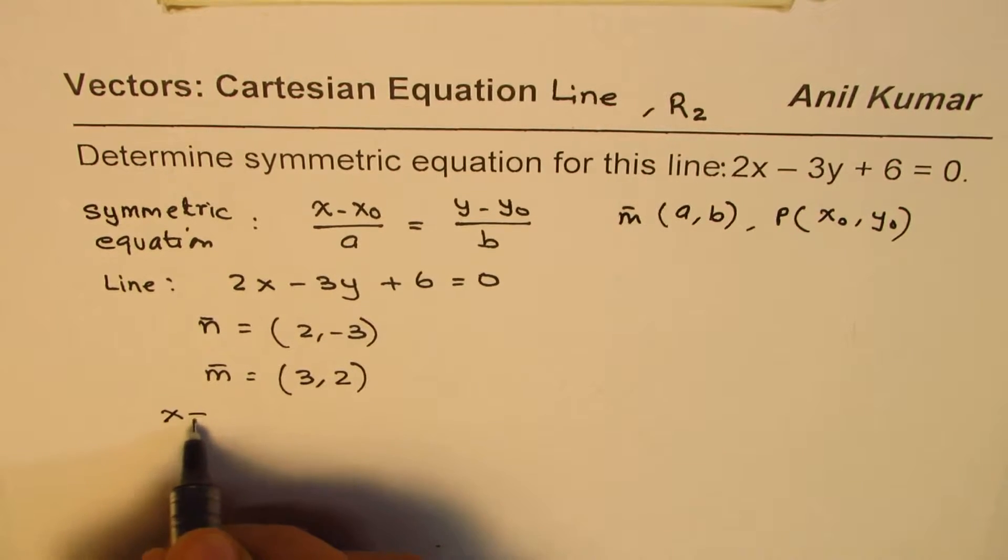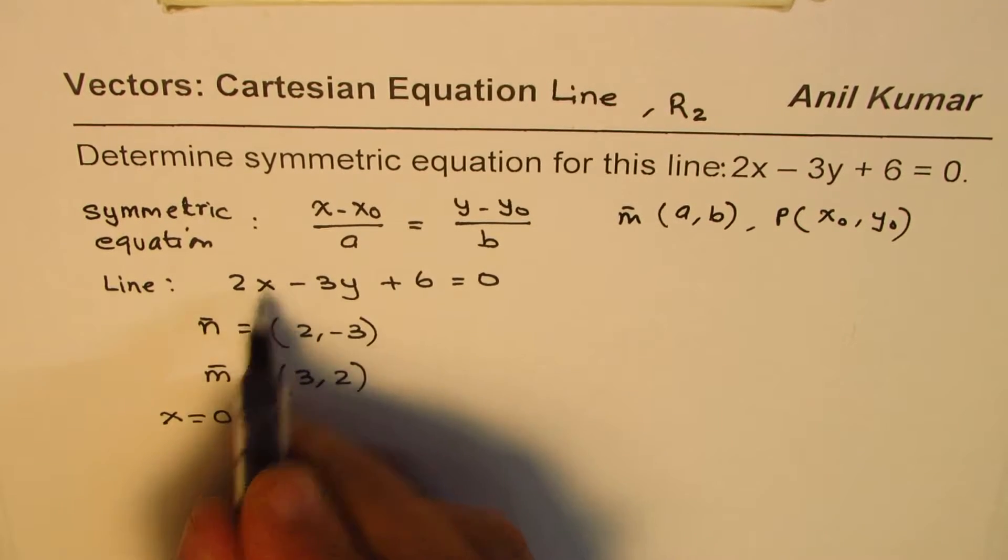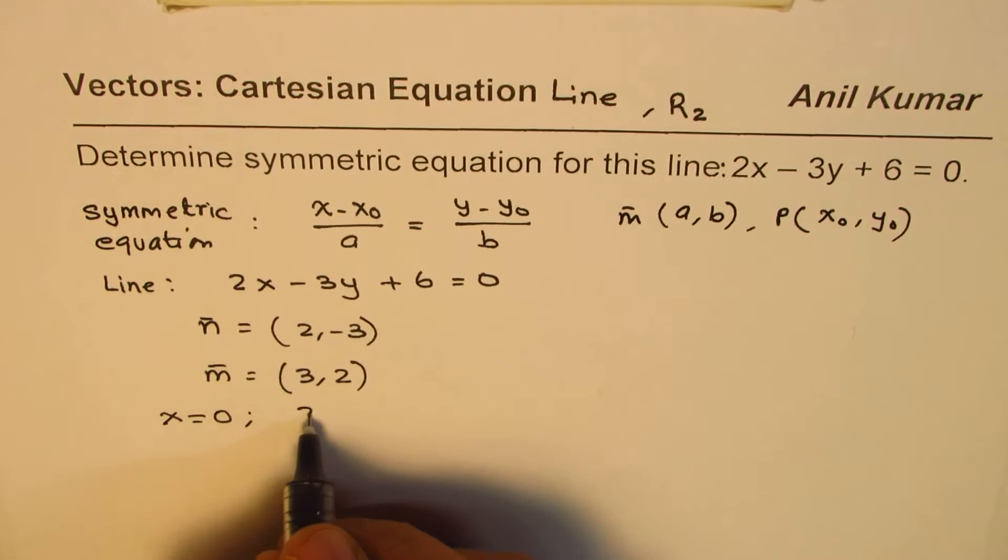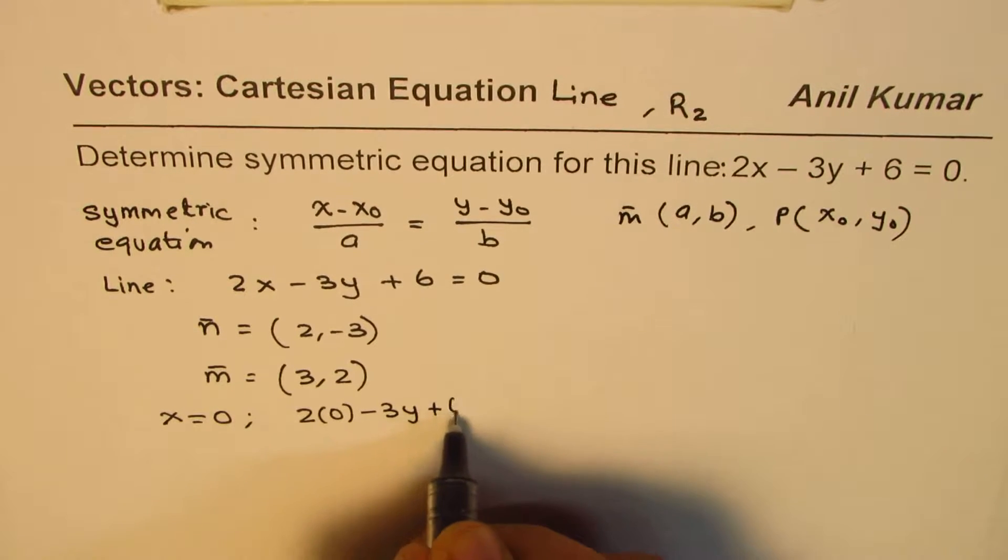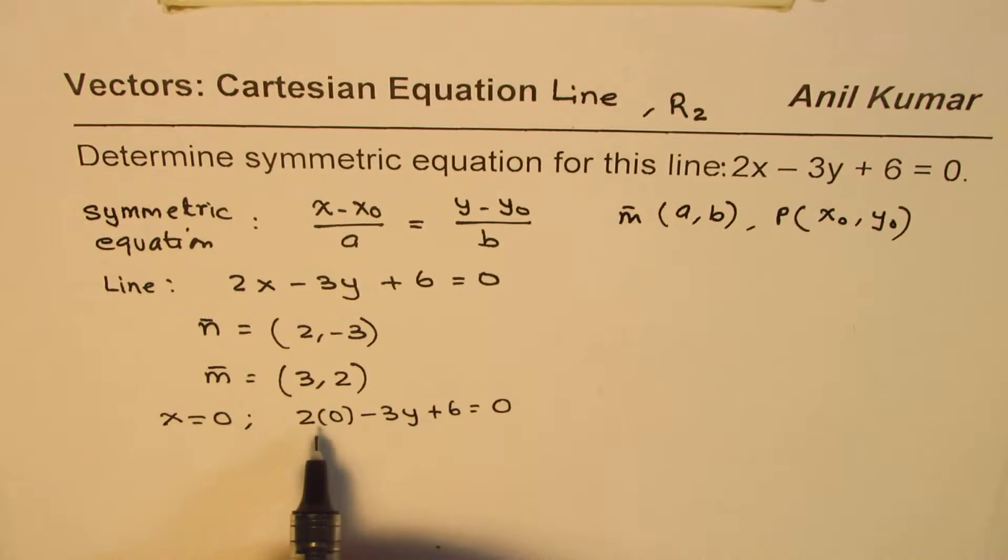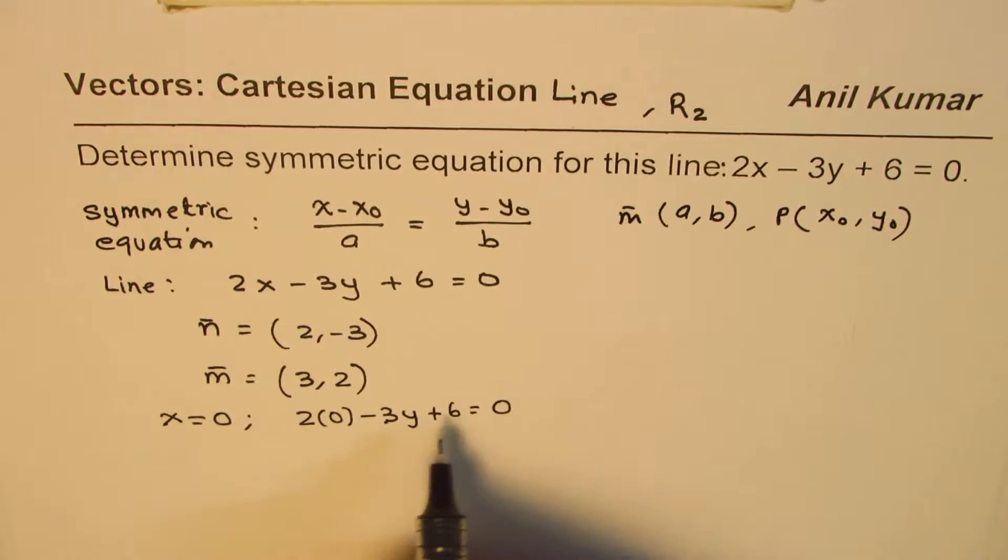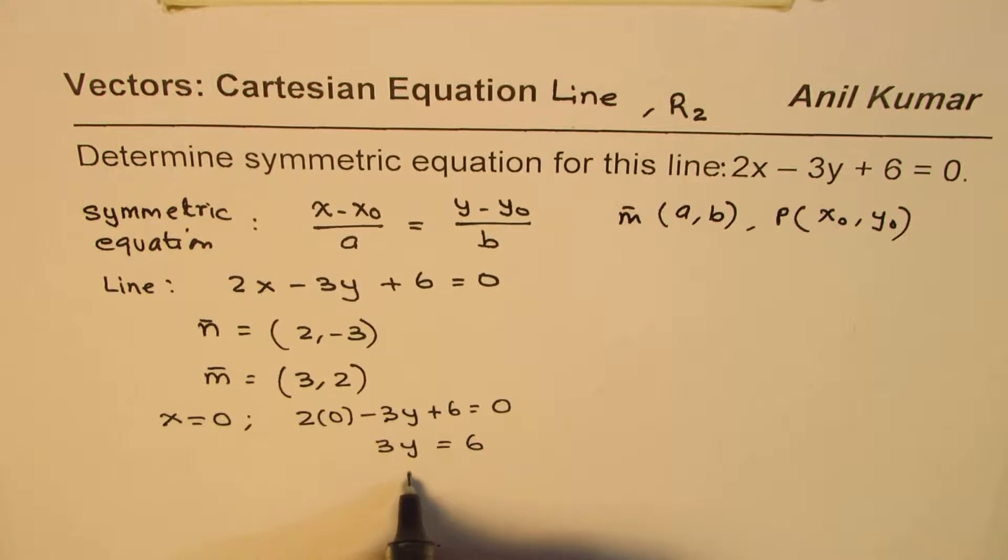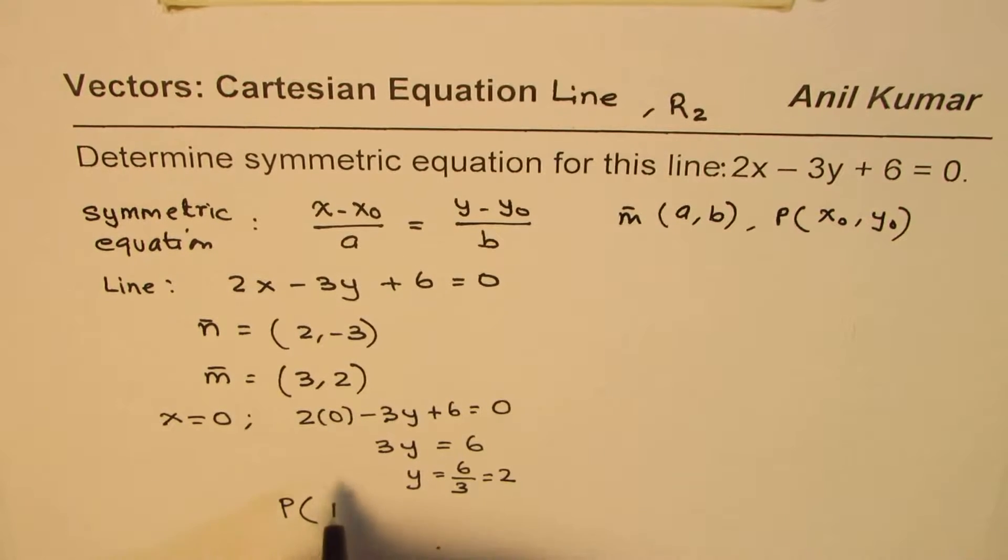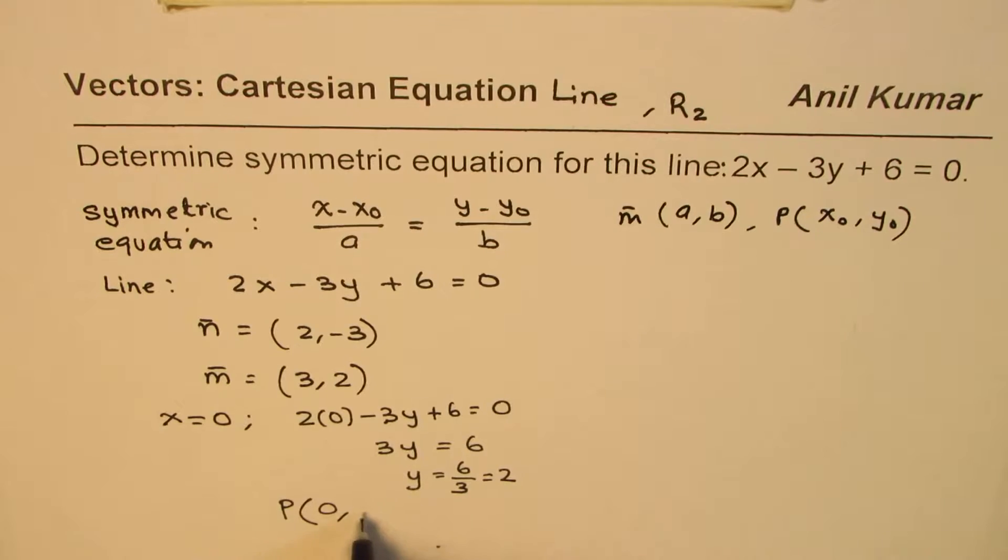So, if I substitute x equals to 0, in that case, what happens to the line? I get 2 times 0 minus 3y plus 6 equals to 0, and this is 0. So, we can solve for y. So, we have 3y equals to 6 or y equals to 6 divided by 3, which is 2. So, we get a point on the line as x is 0 and y is 2.